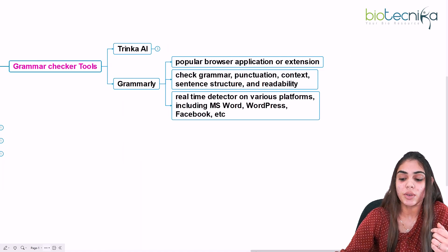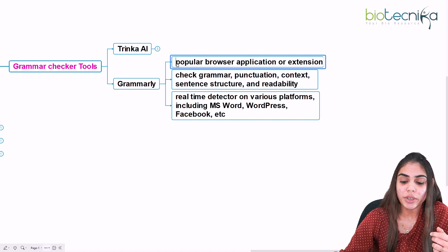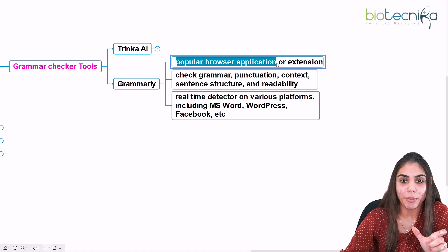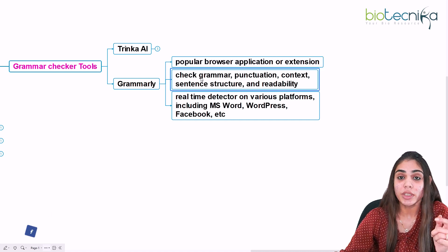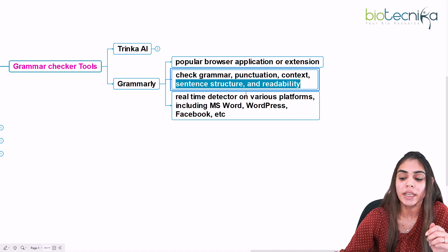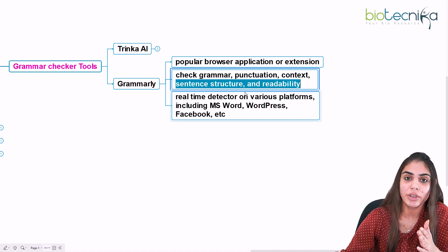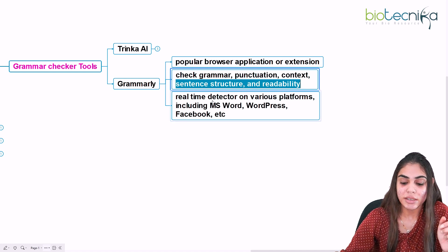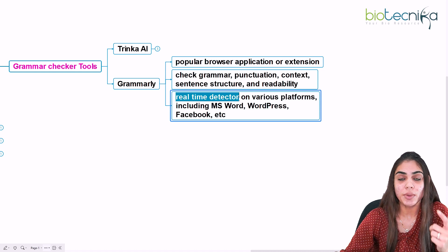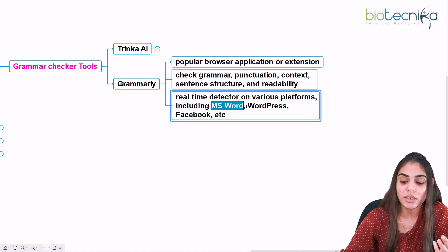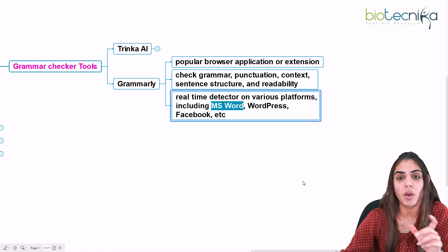Grammarly is a well-known tool used to correct grammatical and spelling mistakes in your language. It is a popular browser extension which checks grammar, punctuation, sentence structure, and readability problems. It is also used as a real-time detector, and you can use Grammarly on MS Word when writing your thesis, on WordPress, Facebook, or Google Drive.